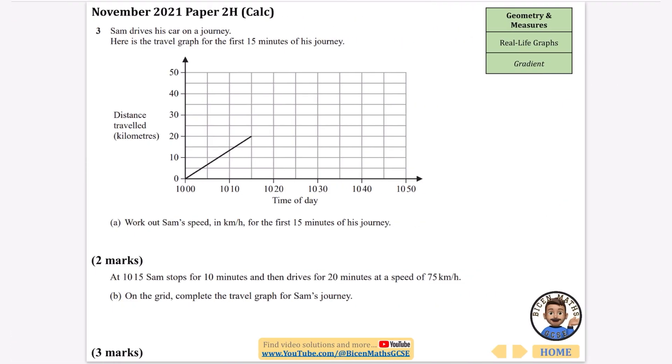Sam drives his car on a journey. Here is the travel graph for the first 15 minutes of his journey. Work out Sam's speed in kilometers per hour for the first 15 minutes. You could use the speed-distance-time formula, but I think it's better to think logically. In 15 minutes he's traveling 20 kilometers. Speed is how many kilometers you do in an hour. 15 minutes to 60 minutes, we're multiplying by 4, so 20 times 4 is 80 kilometers. So the speed is 80 kilometers per hour.